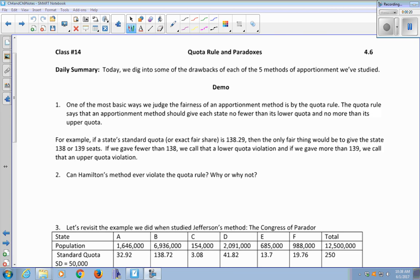For example, if a state's standard quota or their exact fair share of seats is 138.29, then the only fair thing is to give that state either 138 or 139 seats. If we give fewer than 138, we call that a lower quota violation. And if you give more than 139, we call that an upper quota violation.